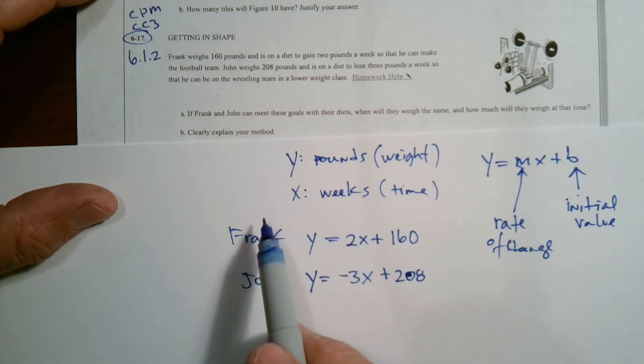So there's my two equations. Frank gaining two pounds a week plus the initial pounds of 160. That was Frank. John is losing three pounds a week with the initial weight of 208.